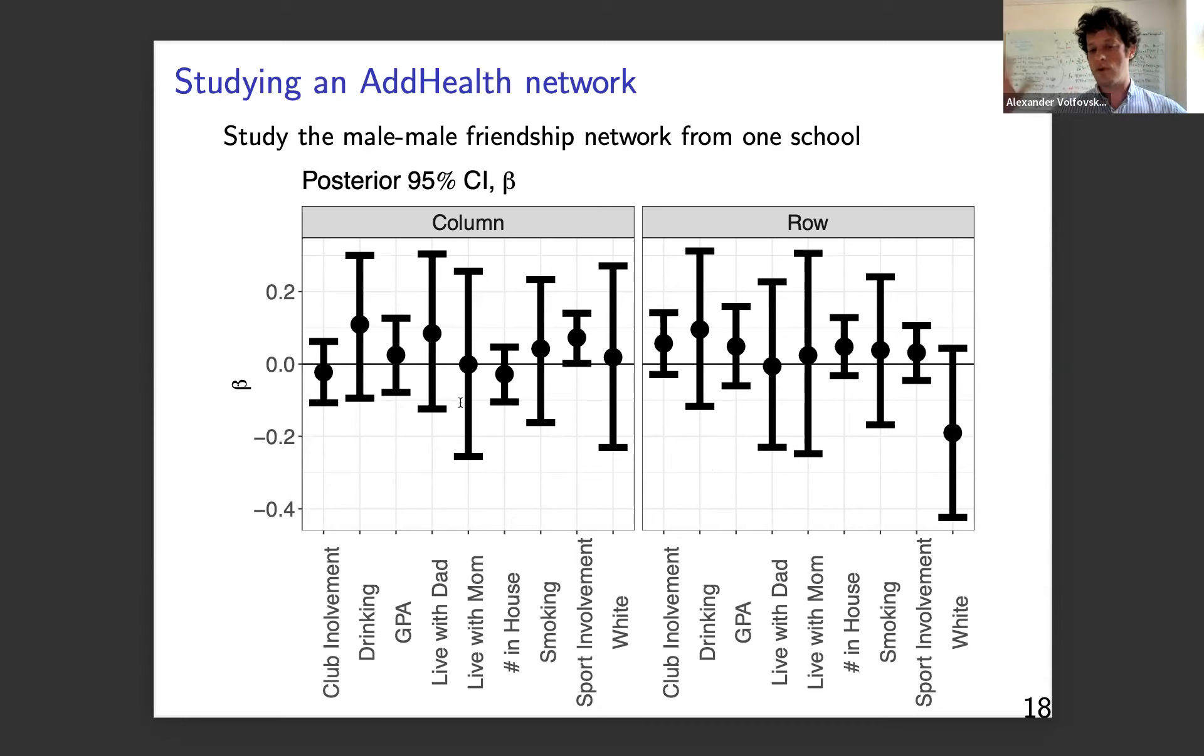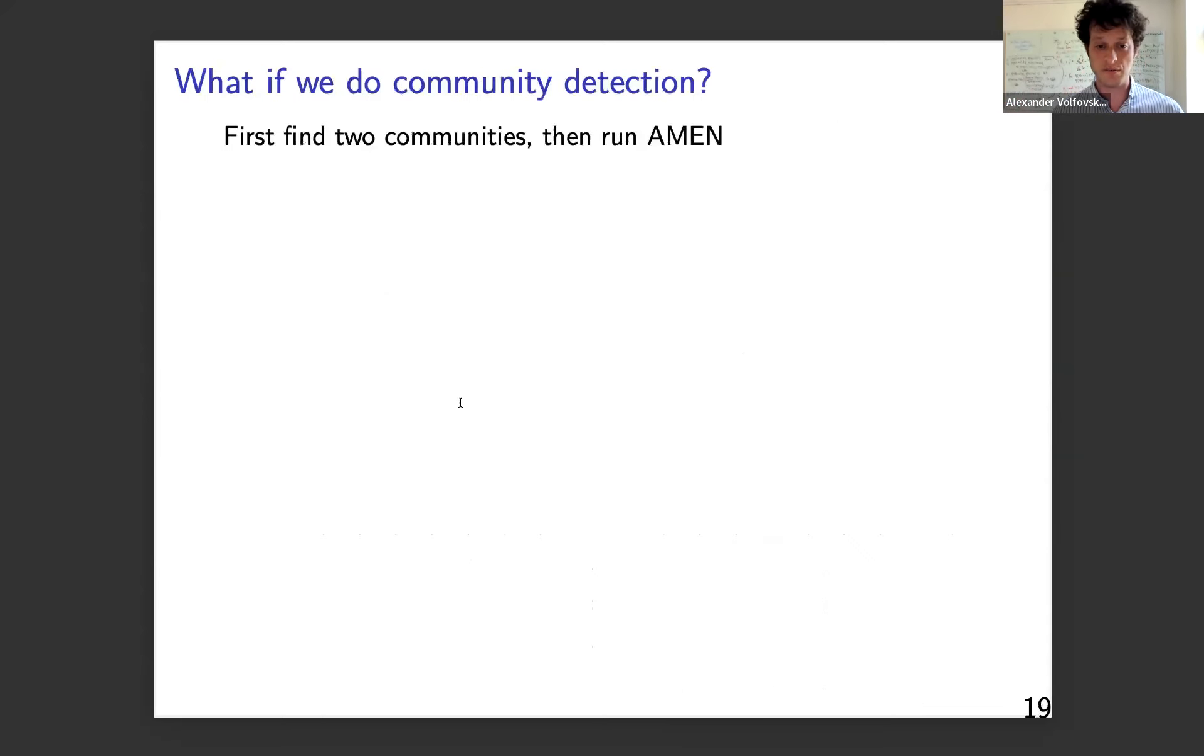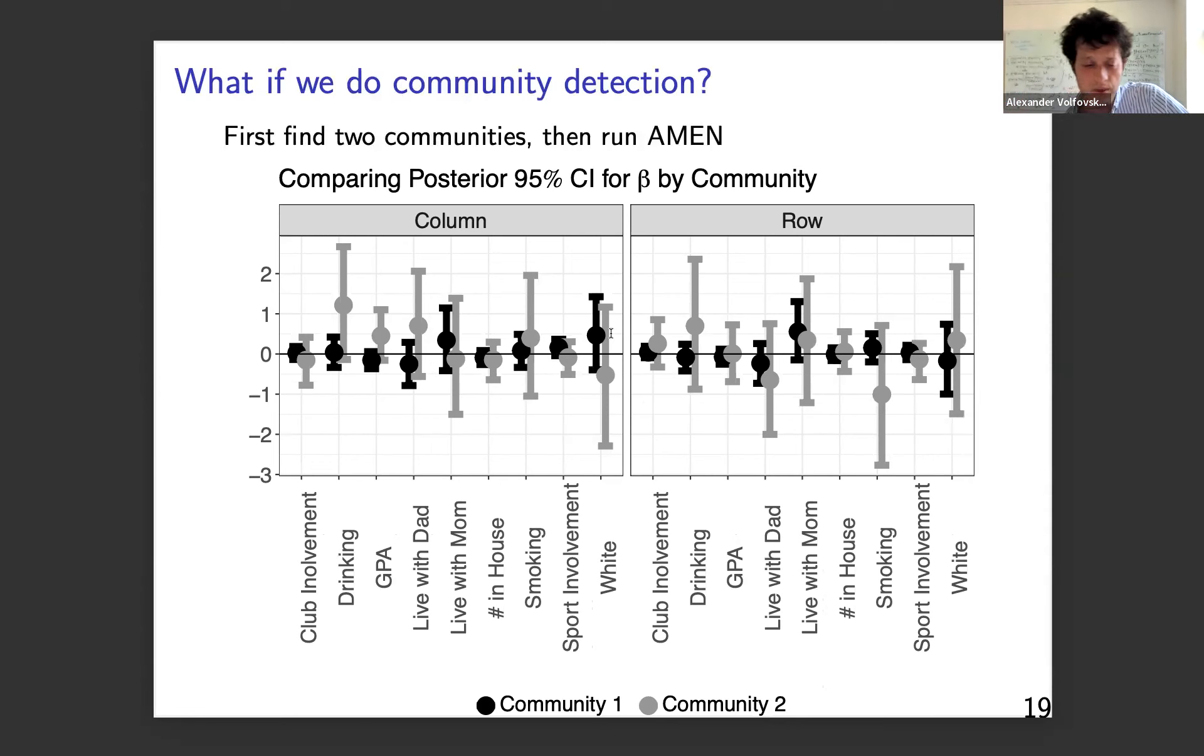I will not talk about why data are fully observed as an assumption that I list, other than to say that most network data are not fully observed. And you have to deal with that. And in the AMEN package and in all of the work that's in that, we describe algorithm or approaches to model not fully observed data like ad health. But what I want to concentrate on is this idea that covariates of network, the effect of covariates might be different across units, right? And so this is these latent communities that might lead to different behaviors. So here is one male-male friendship network. We fit a very basic model to it.